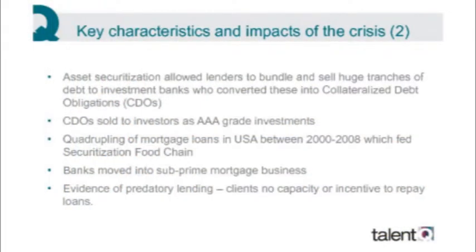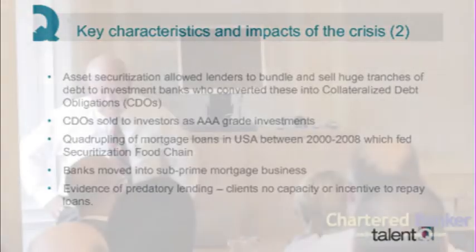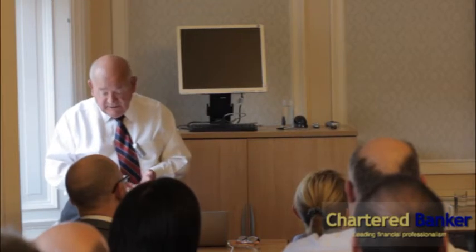I remember when I first started in banking, you didn't do that — you didn't take a large equity stake in a company where you had a large exposure. The huge growth in asset securitisation allowed lenders to bundle and sell huge tranches of mortgages, credit card and loan debt to investment banks, who converted these assets into collateralised debt obligations, or CDOs. These CDOs were then sold on to investors as AAA grade investments.